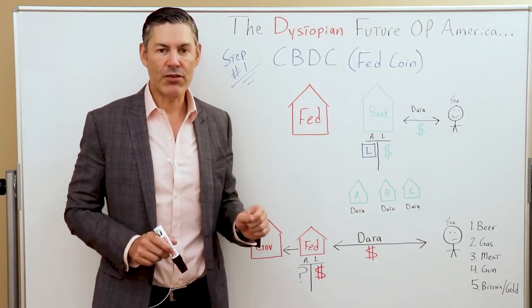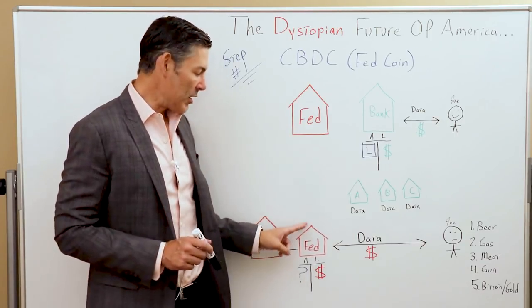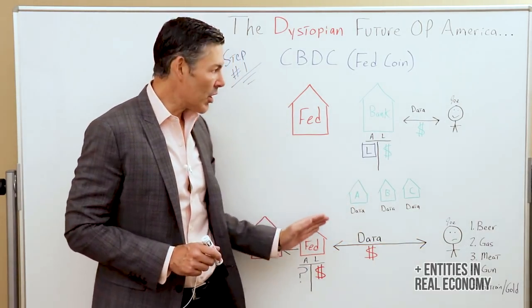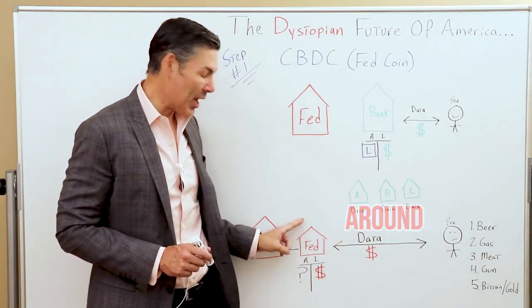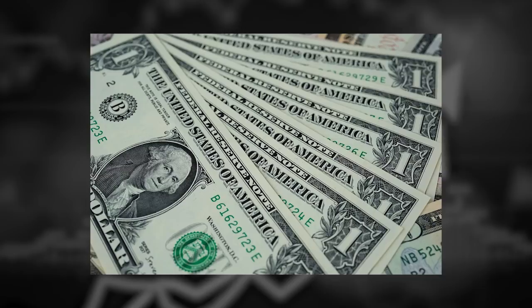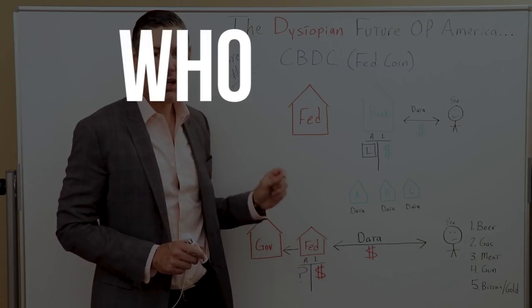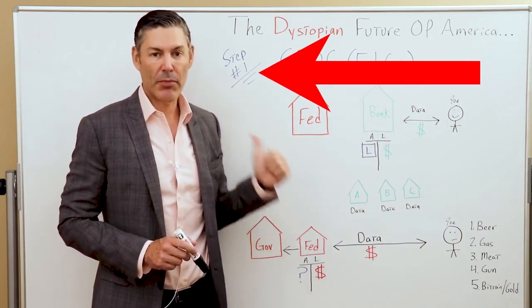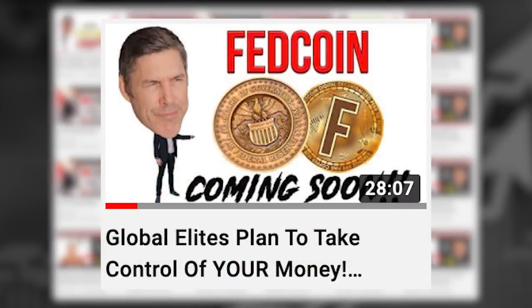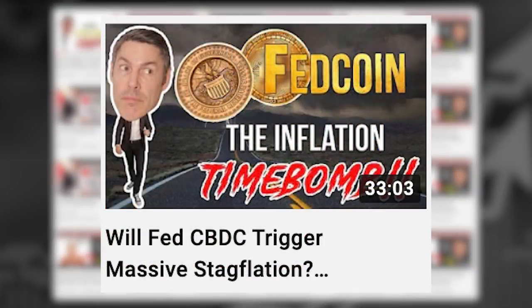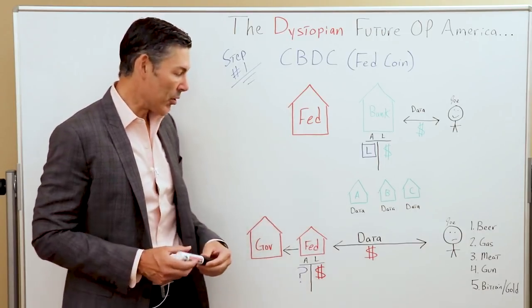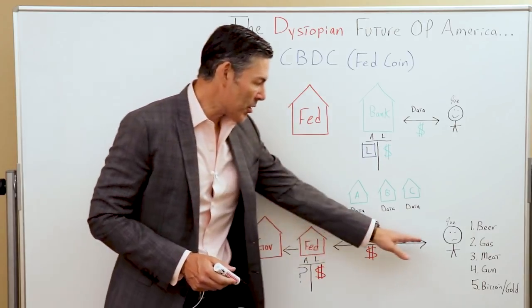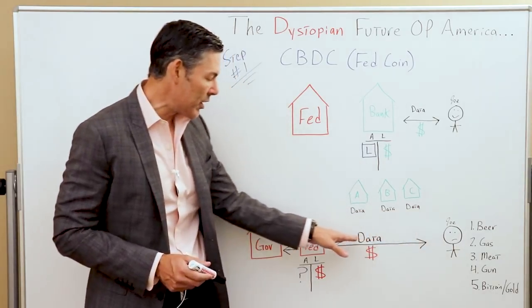Now let's go over how it would work with a central bank digital currency. The Fed would have a direct relationship to average Joe and the entities in the real economy — they would get around the commercial banking system. They would be able to create loans, therefore controlling the amount of dollars and, maybe more importantly, who gets those dollars and how fast they spend the dollars they're receiving. The main point is this relationship between entities and individuals in the real economy now goes directly to the Fed.